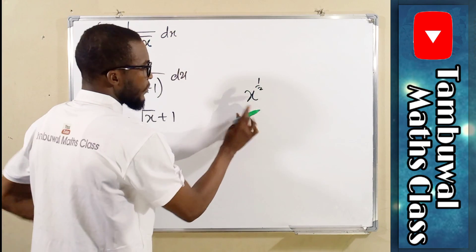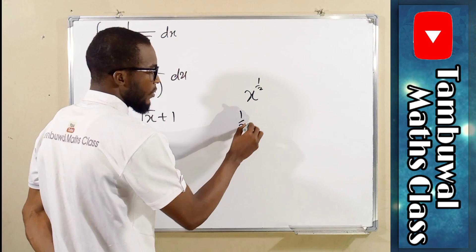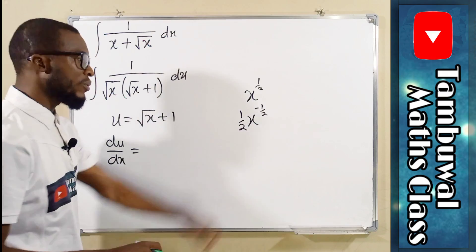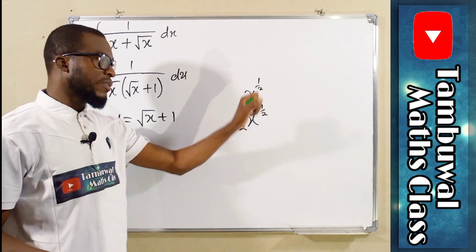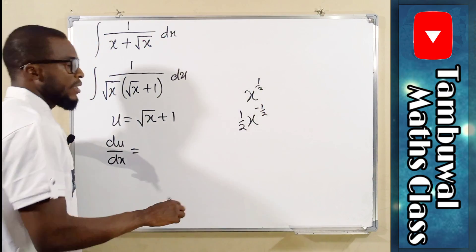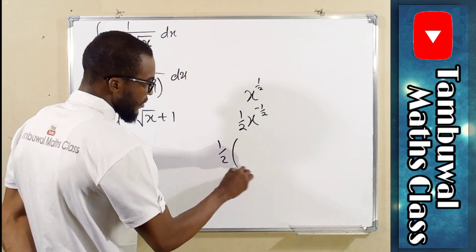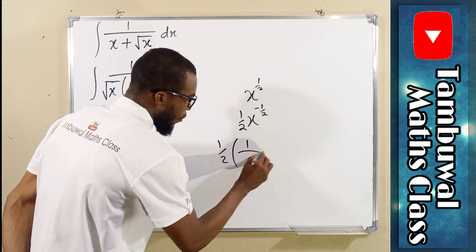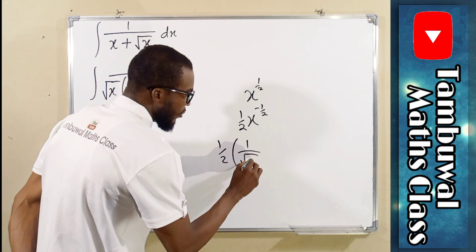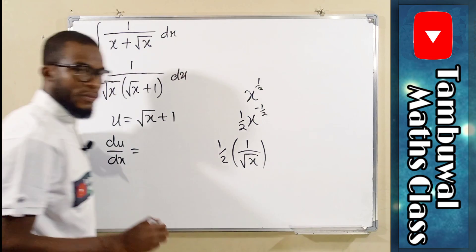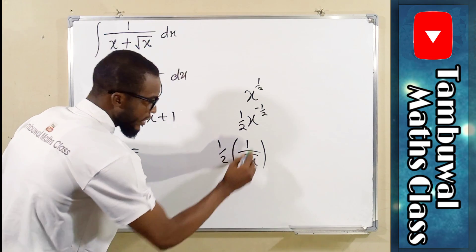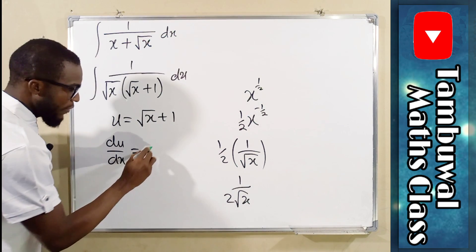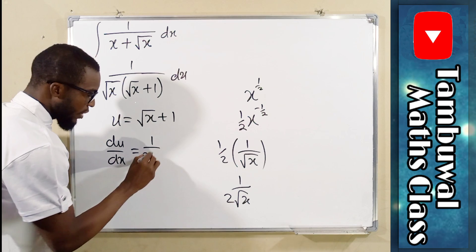You subtract 1, so we have 1 over 2, x to the power negative 1 over 2, because half minus 1 is the same thing as minus half. So this is the same thing as 1 over 2, and inside we can rationalize this as 1 over the square root of x. By laws of indices, if you expand this, you shall obtain 1 over 2 root x. So we have du/dx equals 1 over 2 root x.